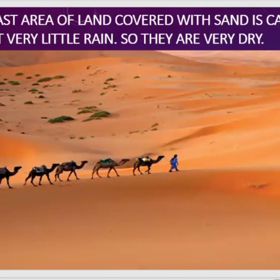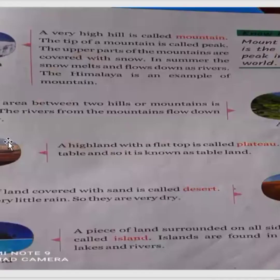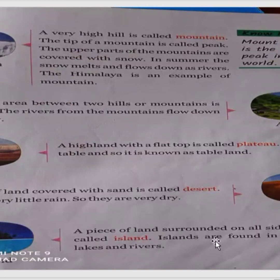Next is an island. What is an island? A piece of land surrounded on all sides by water is called island. Islands are found in oceans, seas, lakes and rivers.